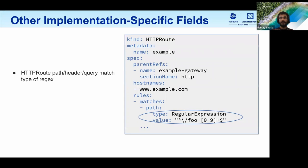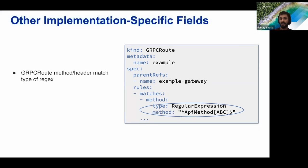In addition, the regular expression match type on various routes is implementation-specific support level, because various implementations may use different regular expression engines. So HTTPRoute path, header, or query parameter matching when of type regular expression is implementation-specific support — and similarly for gRPC route.